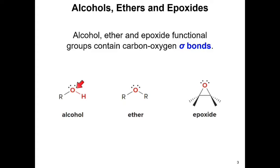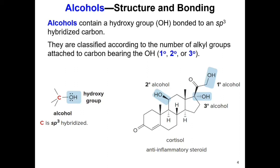You're already familiar with alcohols and ethers. Alcohols have a hydroxy group, and ethers have an ether group. Epoxides are similar to ethers in that they also contain an ether group within a cyclic ring. The chemical structure of alcohols contains a hydroxy group bonded to an sp3 hybridized carbon. Alcohols can be classified based on the type of carbon bonded to the hydroxy group: primary, secondary, or tertiary.